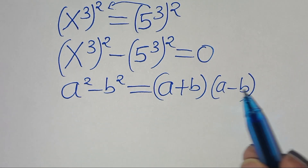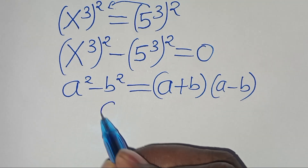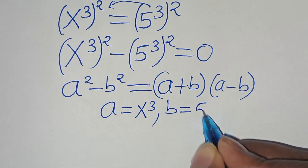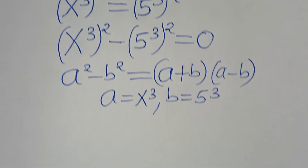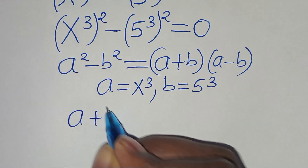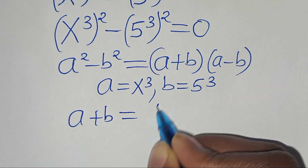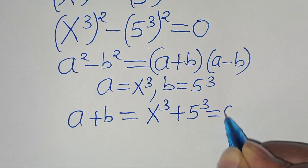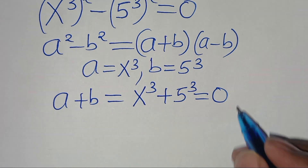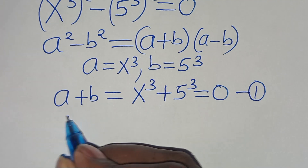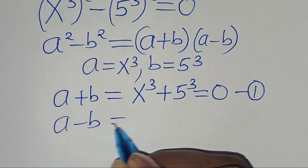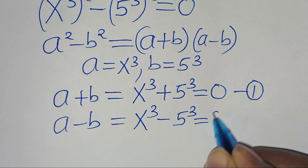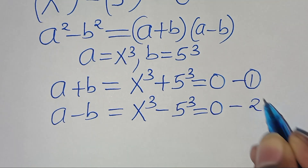This is the difference of two perfect squares with a equal to x to the power of 3, and b equal to 5 to the power of 3. This implies that a plus b gives us x to the power of 3 plus 5 to the power of 3, equal to 0 — call this equation 1. And a minus b gives x to the power of 3 subtract 5 to the power of 3, equal to 0 — call this equation 2.